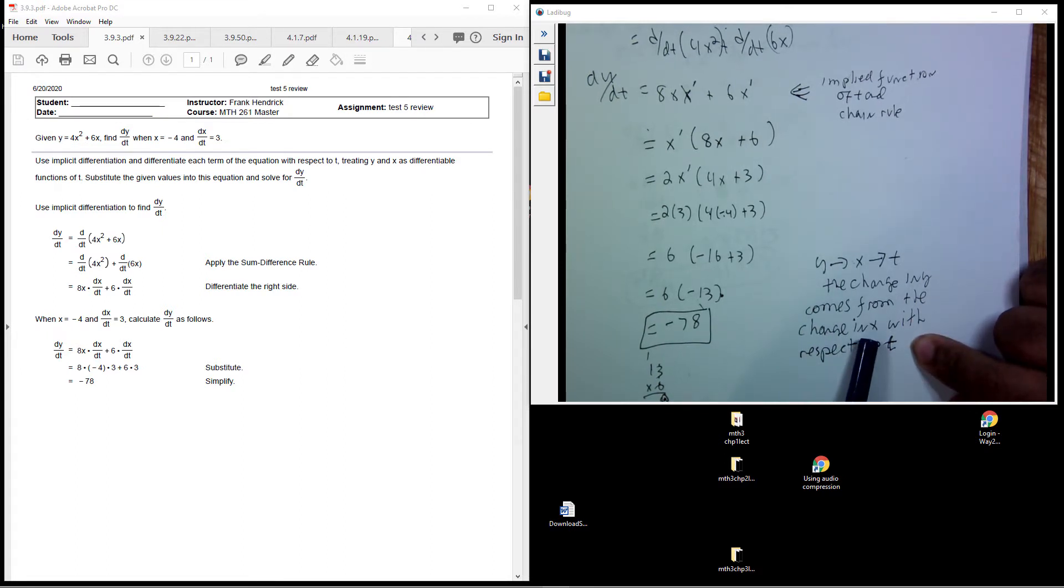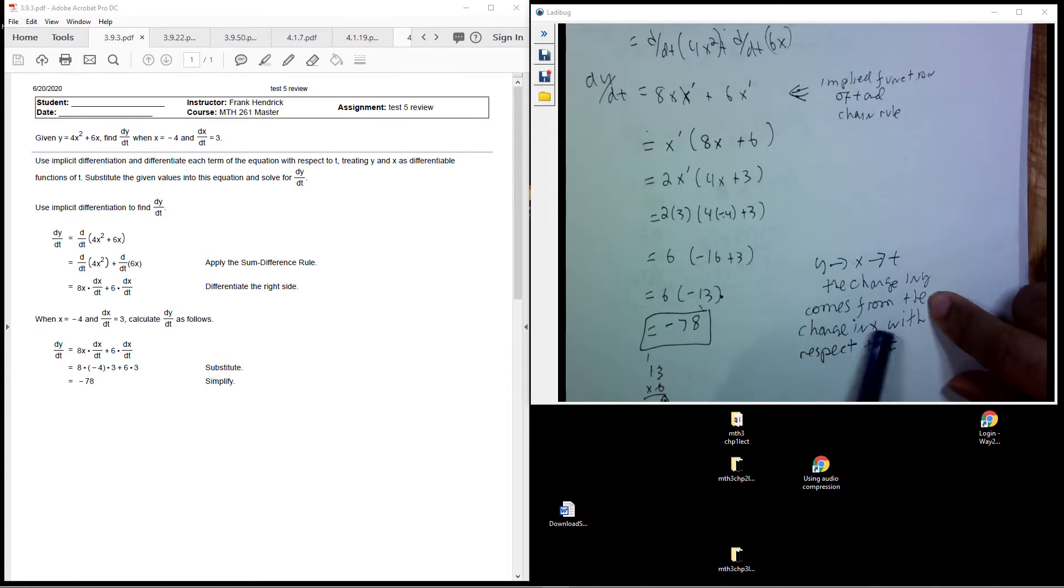So x is a function with respect to t, and inside that function, it's inside y. So the change in the y function comes from the change in the x function with respect to t, and t is our independent variable here.